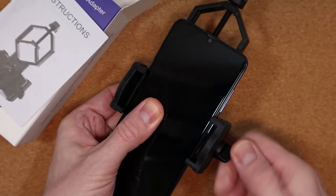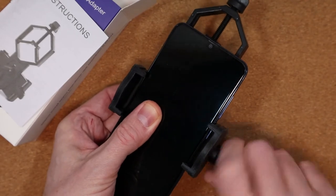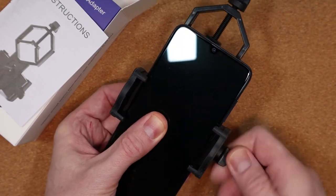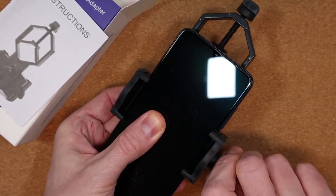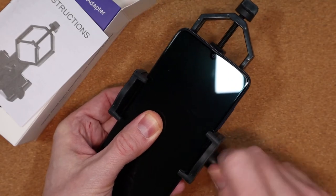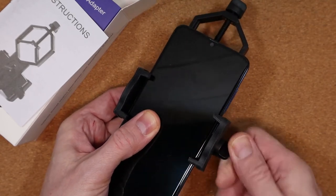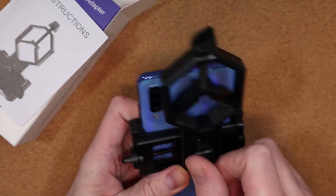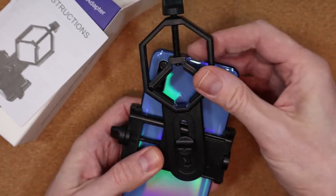Once you've done that and you're happy that your phone is secure, turn the adapter over and slacken off the dial at the back. Adjust the adapter until the lens of your camera is roughly in the middle of the clamp that connects to the eyepiece. I'm aligning the eyepiece of the microscope with the central lens here.